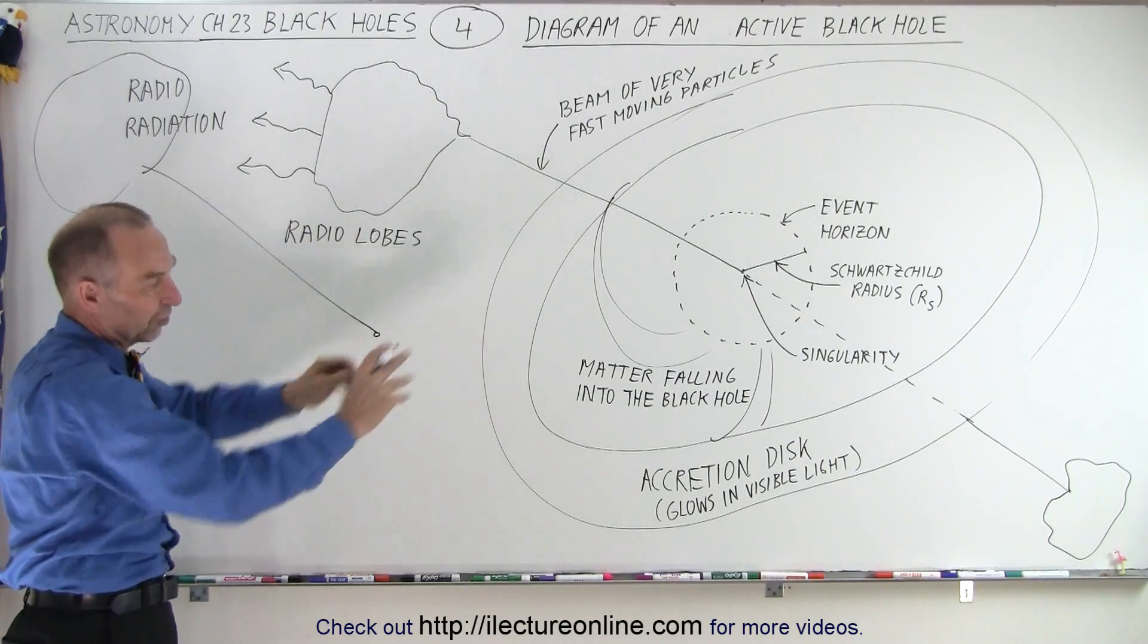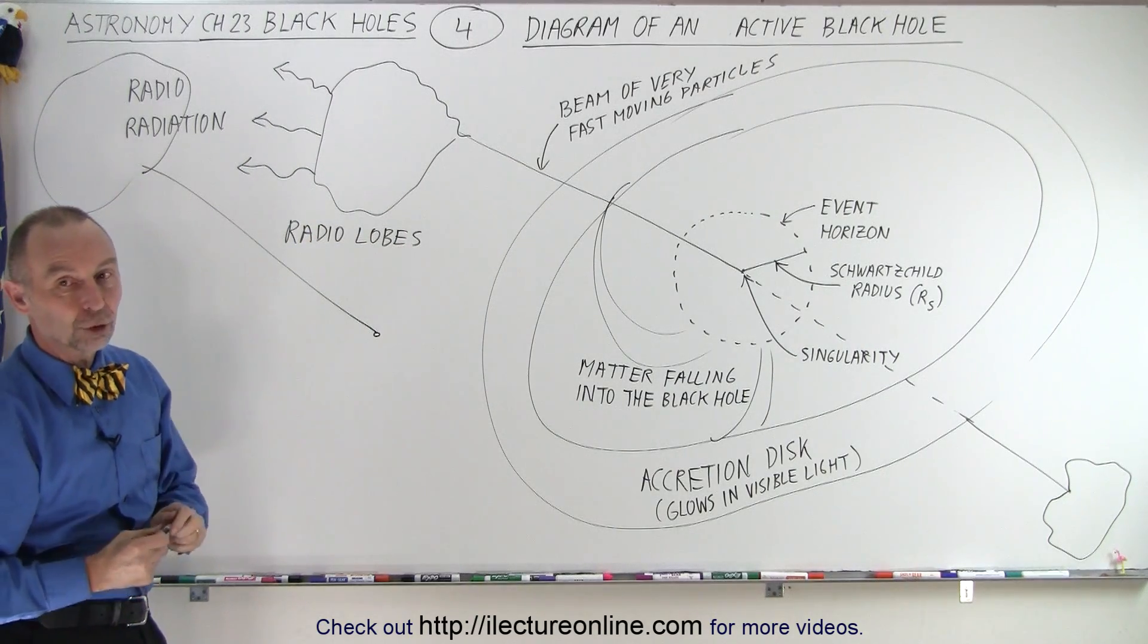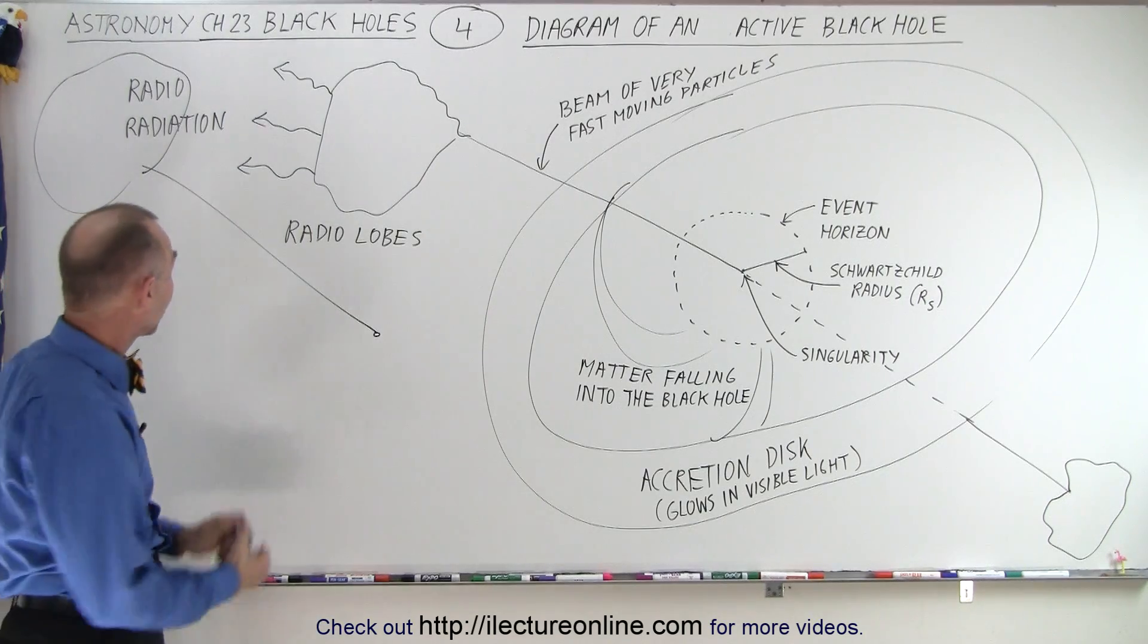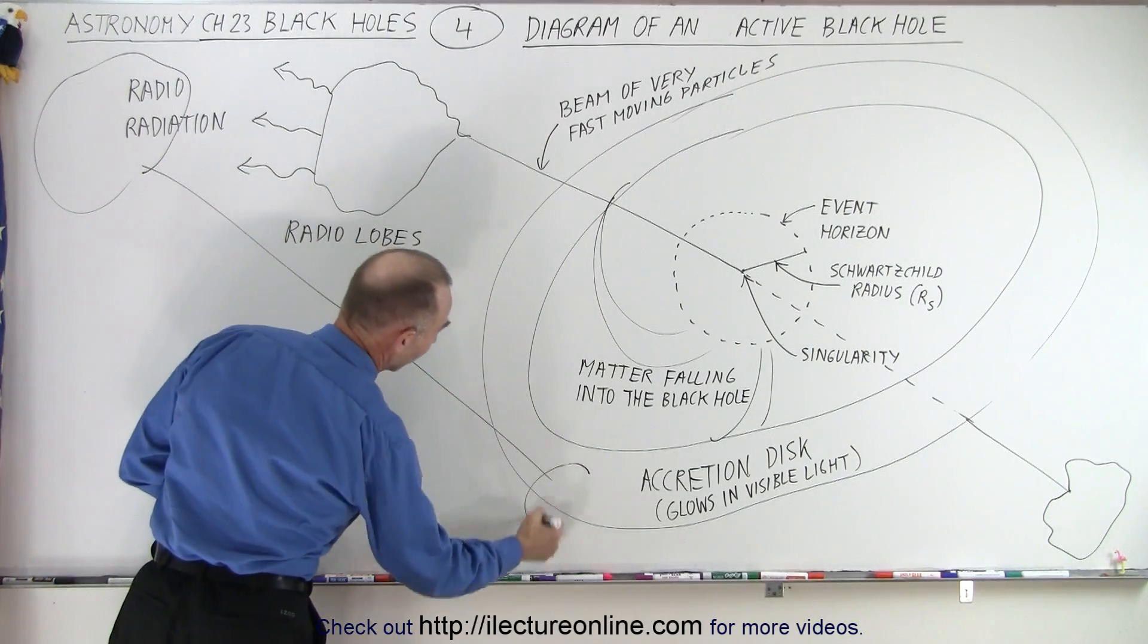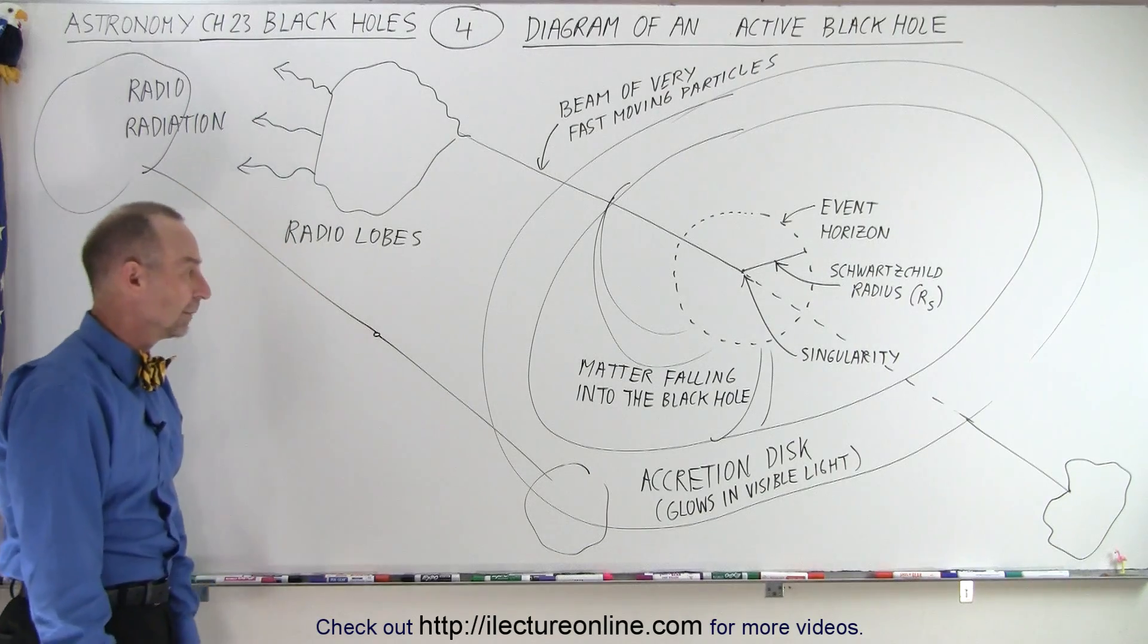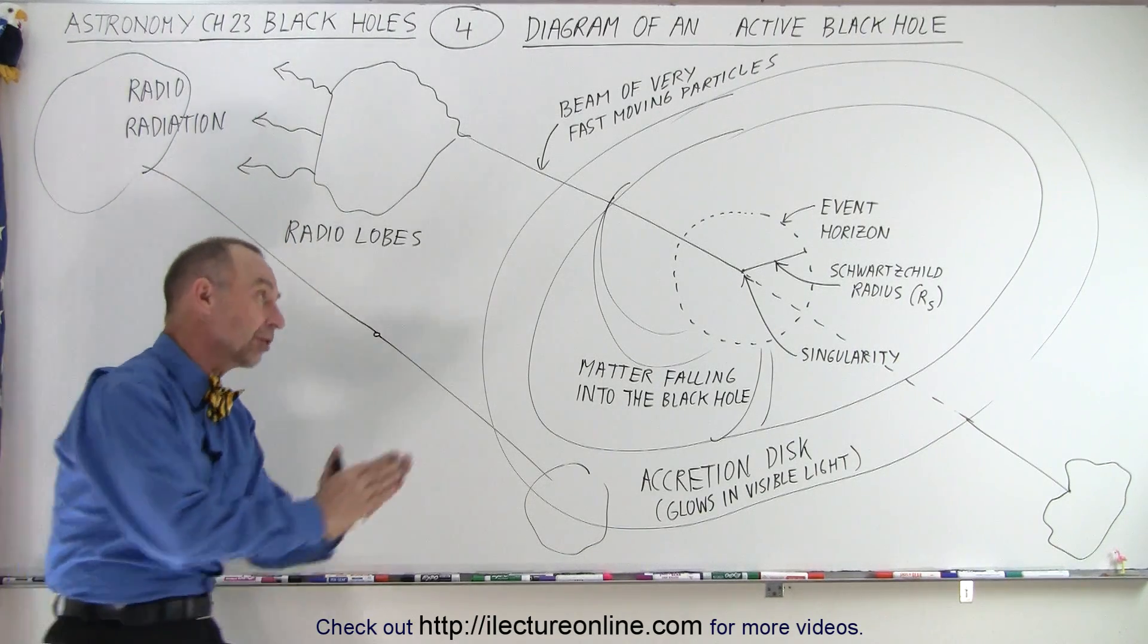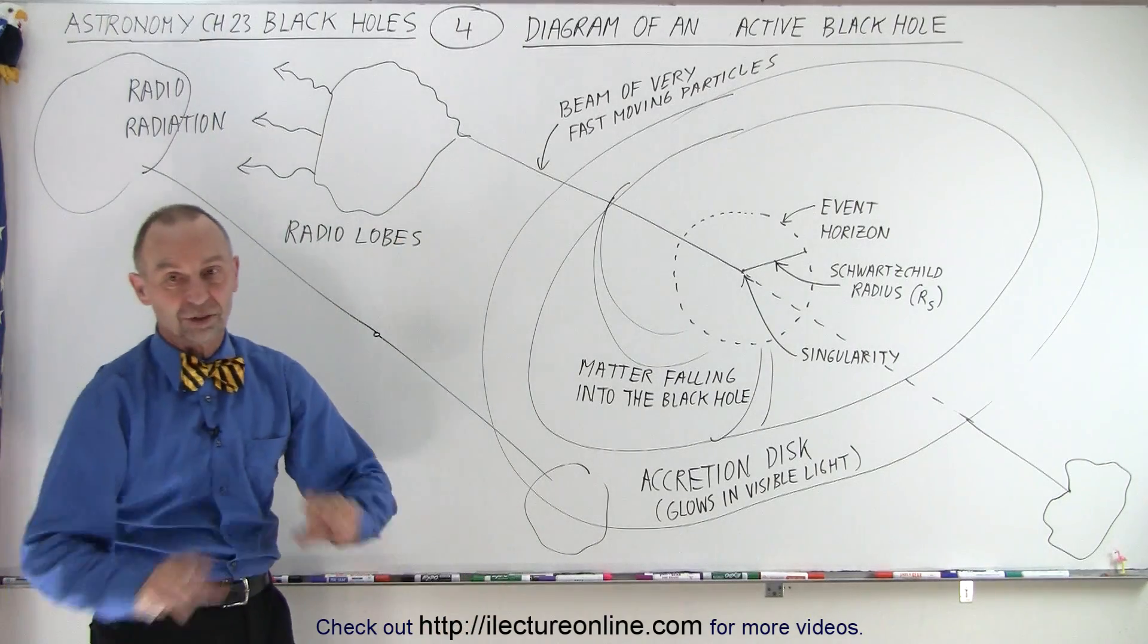Only two, one in each direction. Yeah, so one that way and one that way. Because the magnetic fields work in such a way that only sends the stream of particles up and the stream of particles down, in no other direction.